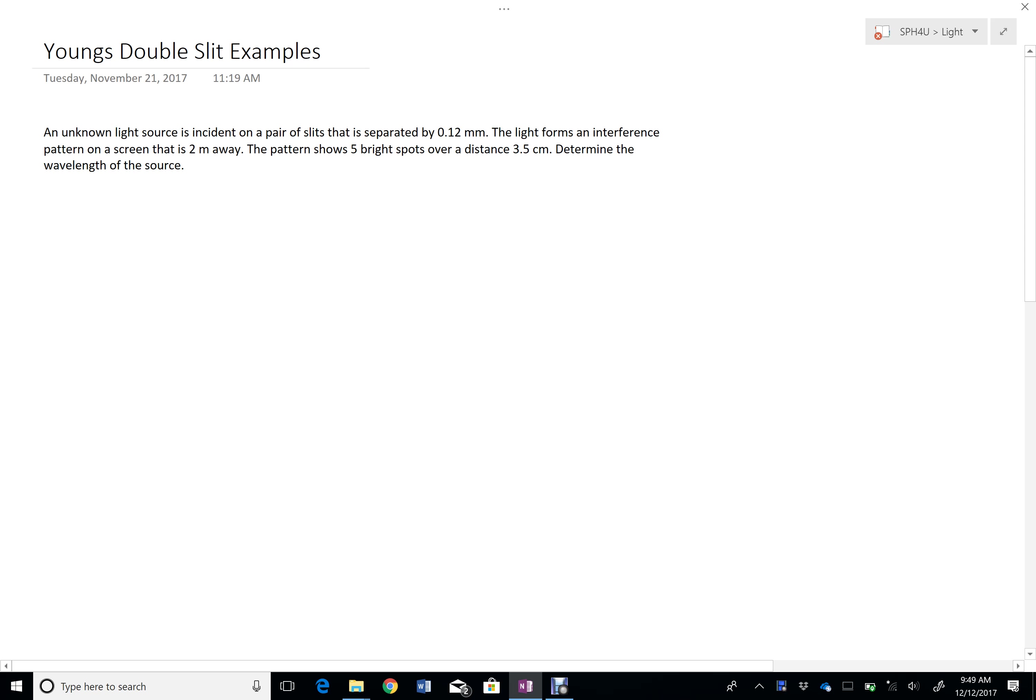I'm going to work through a couple examples associated with the Young double slit experiment. A monochromatic light source is incident on a pair of slits that are separated by 0.12 millimeters. So the distance between them is 0.12 millimeters,